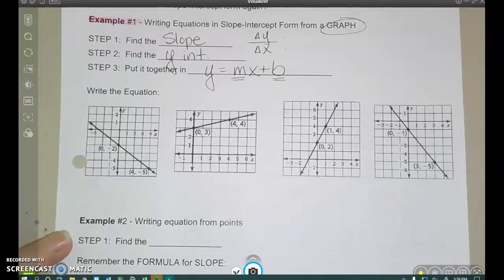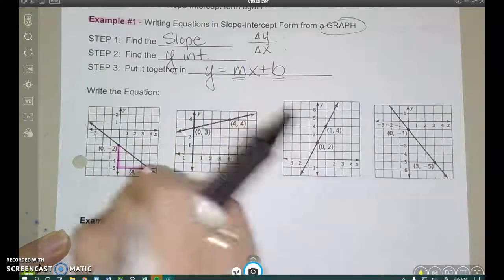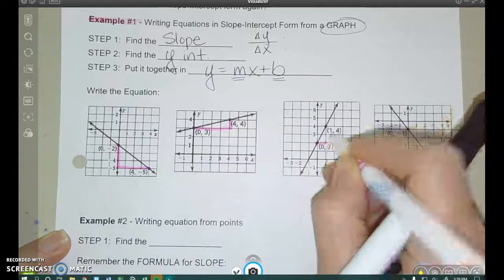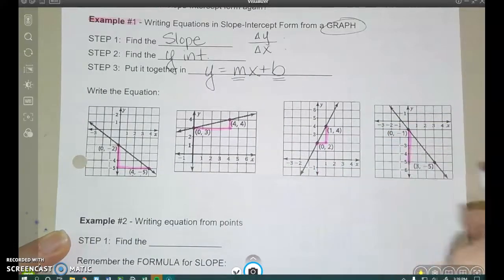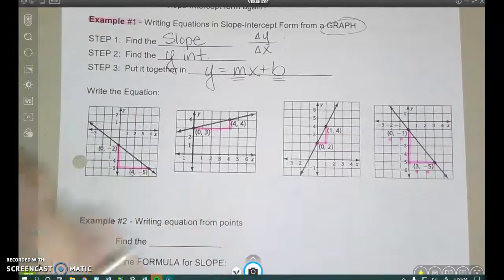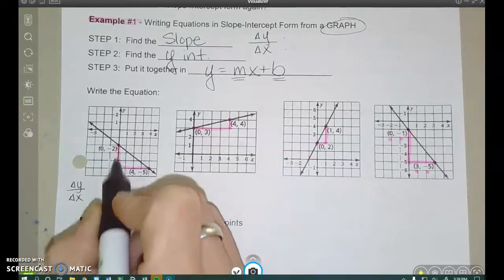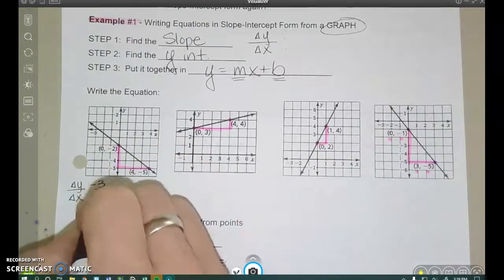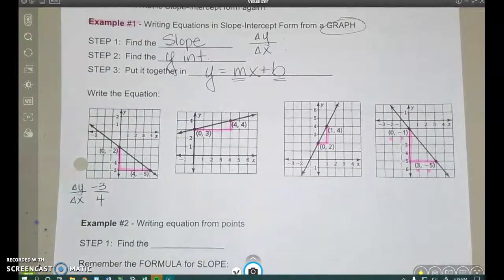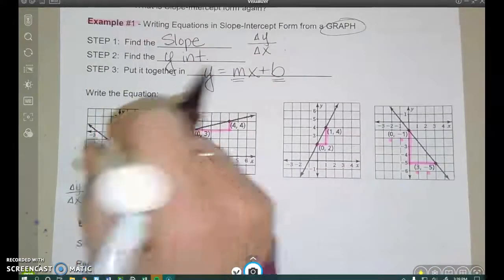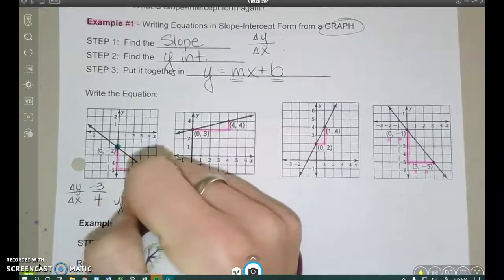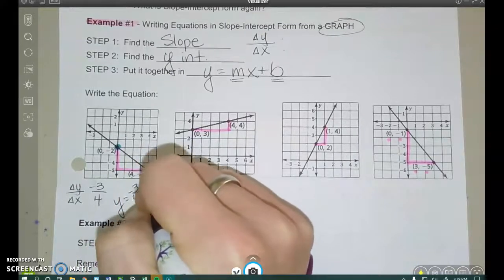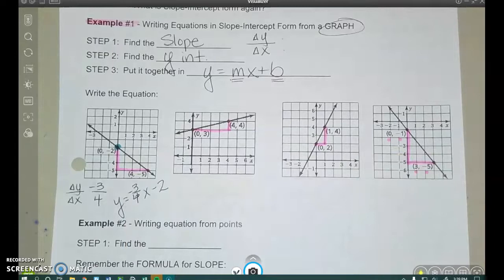Okay, so we know we have to find the slope, so the first thing I'm going to do is draw my triangles here. This is what we did earlier in the chapter when we were getting slope from points on a graph. So it looks like my y, I went down 3, and my x, I went over 4. So there's my slope. And my y-intercept here crosses at negative 2. So y equals m, negative 3 fourths, x, and then minus 2 for your y-intercept.